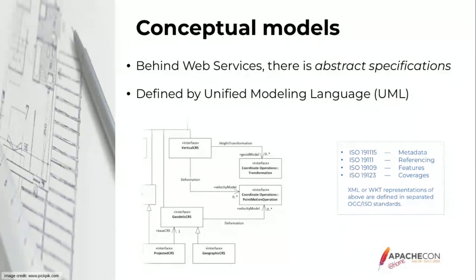We have metadata, referencing, feature, and stuff like that. The important thing is that the specification just describes the concept, and the encoding is defined in separated specifications. For example, for referencing by coordinates, ISO 19111 defines the abstract concept, and ISO 19162 defines the well-known text encoding format.